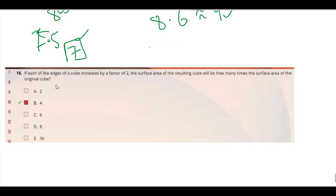Okay, so it says if each of the edges of a cube increase by a factor of two, the surface area of the resulting cube will be how many times the surface area of the original cube?